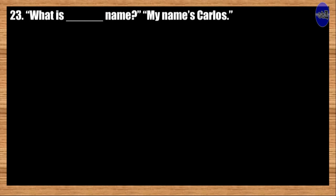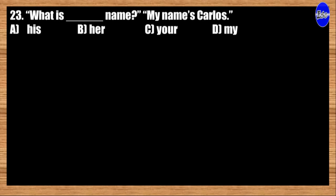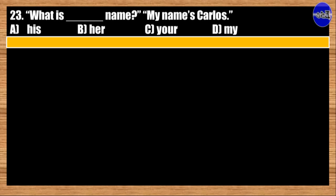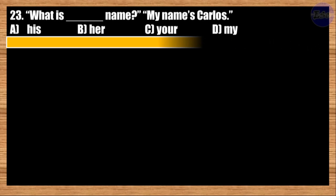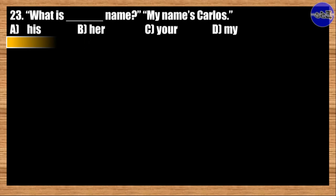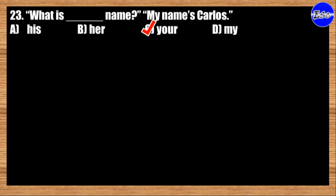Number twenty-two: What is blank name? My name is Carlos. A: his; B: her; C: your; D: my. The best answer is option C. What is your name? My name is Carlos.